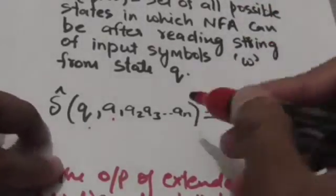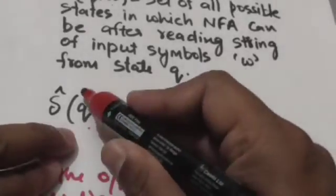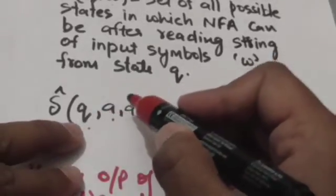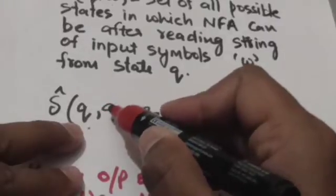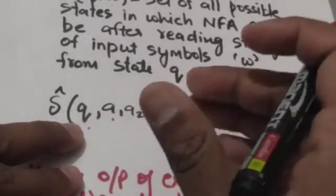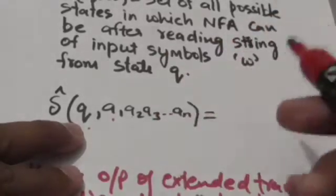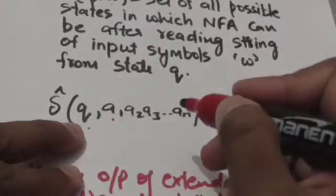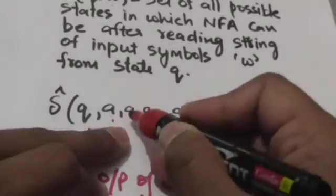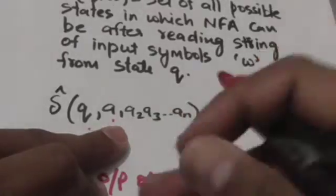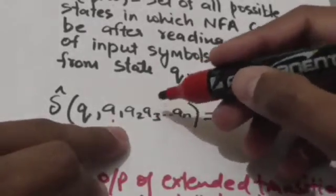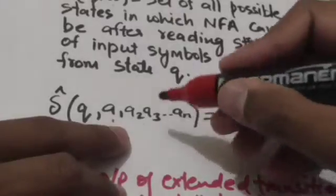First of all, we will find the empty closure of state Q. Then we will apply input symbol A1 to the empty closure of state Q, and we will get a set of states as a result. Then again we will find the empty closure of that set of states, and then again we will apply the input symbol A2. After applying A2, we will get a set of states.